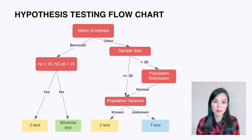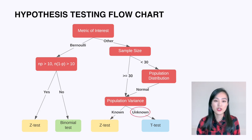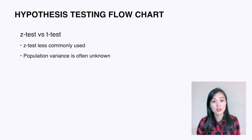If we have a large sample or a small sample from a normally distributed population, we need to also consider if the population variance is known to us or not. If it is, we could use a z-test; otherwise we'd choose a t-test. That's why in reality the z-test is not used as commonly as the t-test, because it requires the population variance to be known and in lots of cases we don't know it.